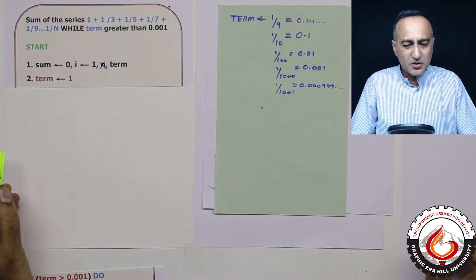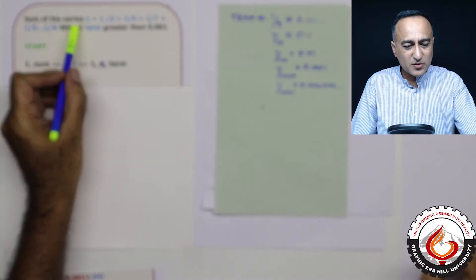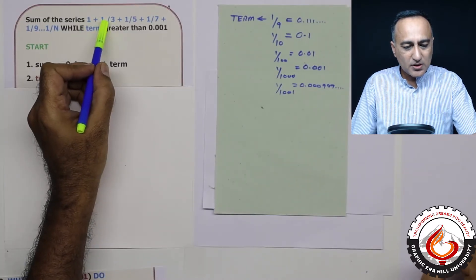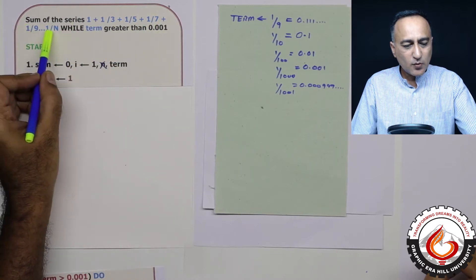Hello friends, we shall now work to find the sum of the series which is 1 plus 1 upon 3 plus 1 upon 5 plus 1 upon 7 so on till 1 upon n.